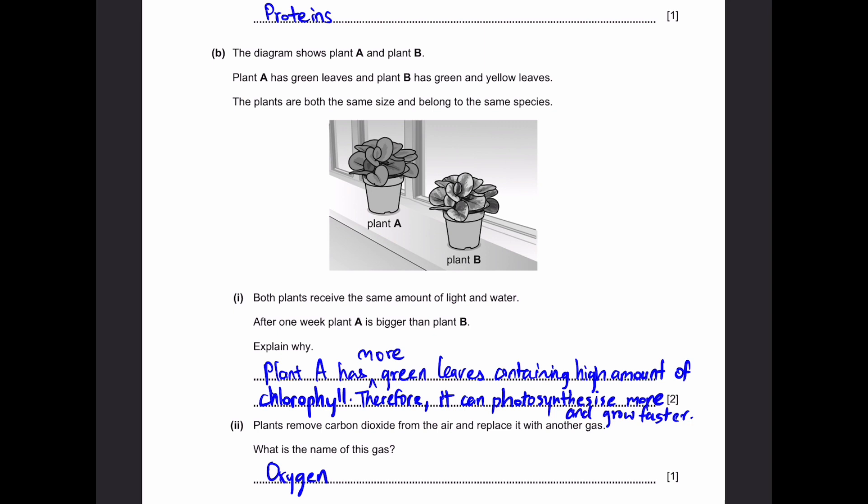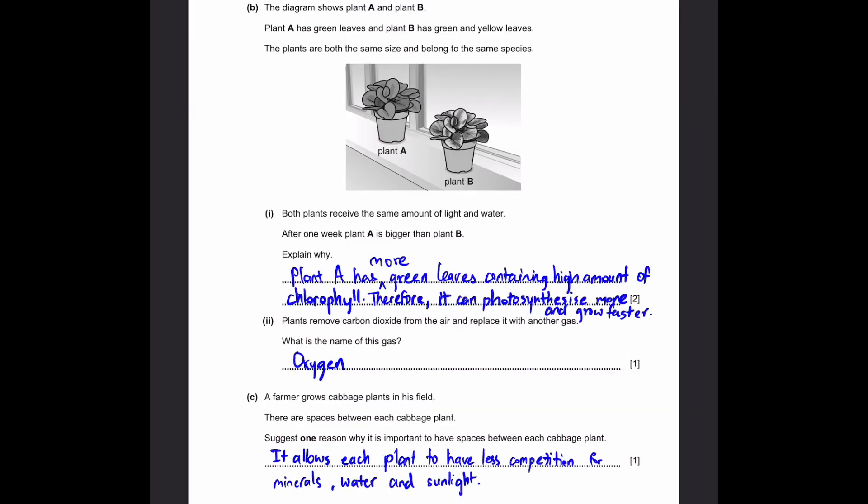You need to mention photosynthesis as well. Plant A has more green leaves containing high amounts of chlorophyll. Therefore, it can photosynthesize more and grow faster. This word 'more' is actually having a huge importance in this question. You could also say plant B has less green leaves, so it photosynthesizes less, using a reverse argument. That's also correct.